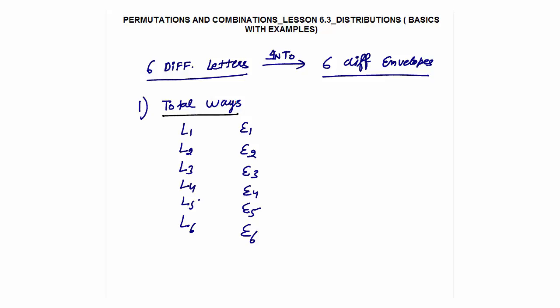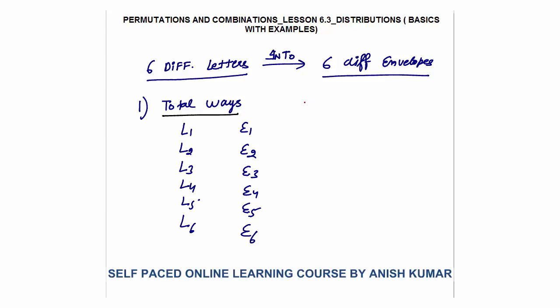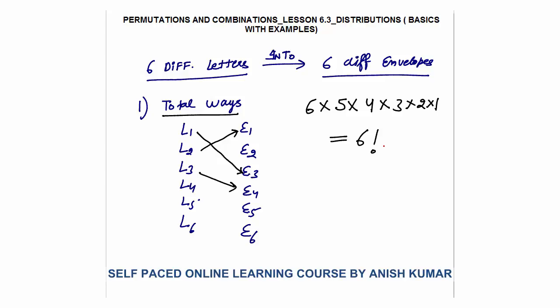Letter 1 can be posted into any of the 6 envelopes — 6 ways. Let's say it goes to E3. Letter 2 now has 5 options, it can go to E1, E2, E4, E5, or E6 — say it goes to E1. Letter 3 has 4 ways, letter 4 has 3 ways, letter 5 has 2, and letter 6 has 1 way. So the total number of ways of putting 6 different letters into 6 different envelopes is 6 factorial.